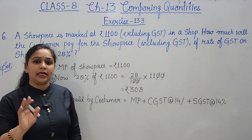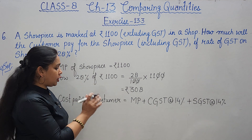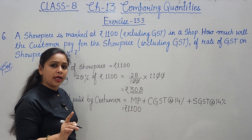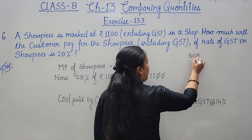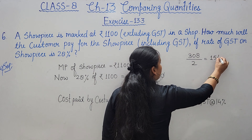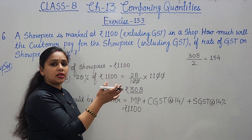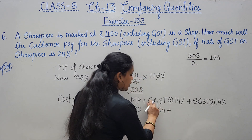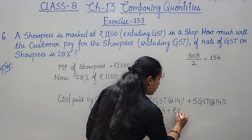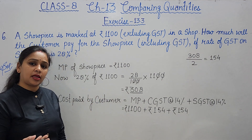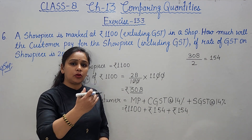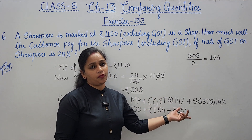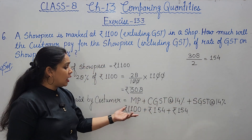Total is 28%, split 50-50%. So we have 1100 and 28% came to 308; half of that is 154. So: marked price 1100 + CGST rupees 154 + SGST rupees 154. This is exactly how the bill calculation is done in any shop — showing amount, CGST at 14%, and SGST at 14%.